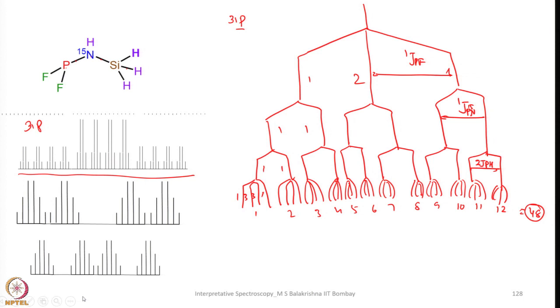Let me continue with some of the molecules that I showed you in my last lecture. I showed you this molecule and 3 spectra, and the first one we concluded is due to 31P NMR and the splitting pattern I showed you. Now we have another set of signals in the second one — 1, 2, 3, 4, 5, 6 — that means 4 multiplets of 6 lines each.